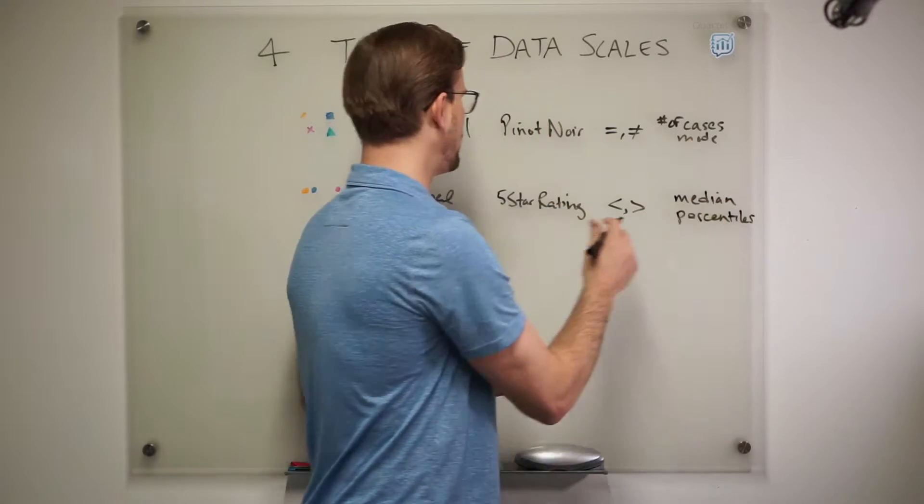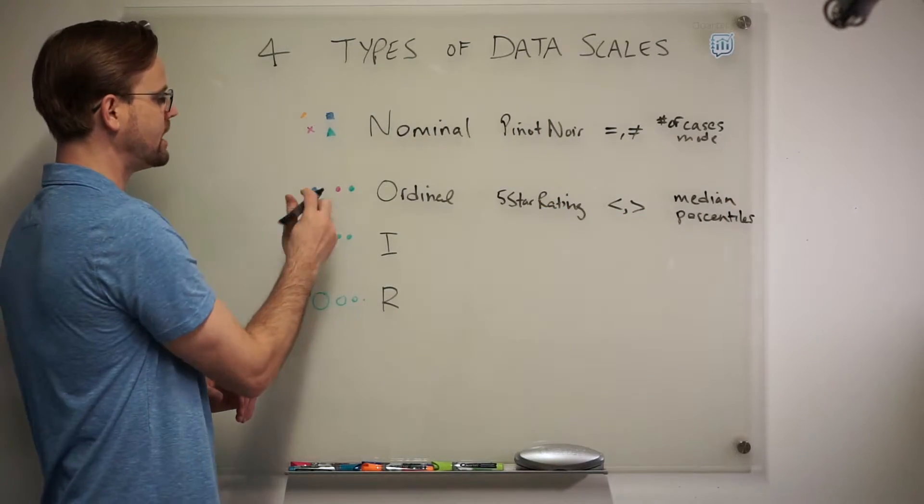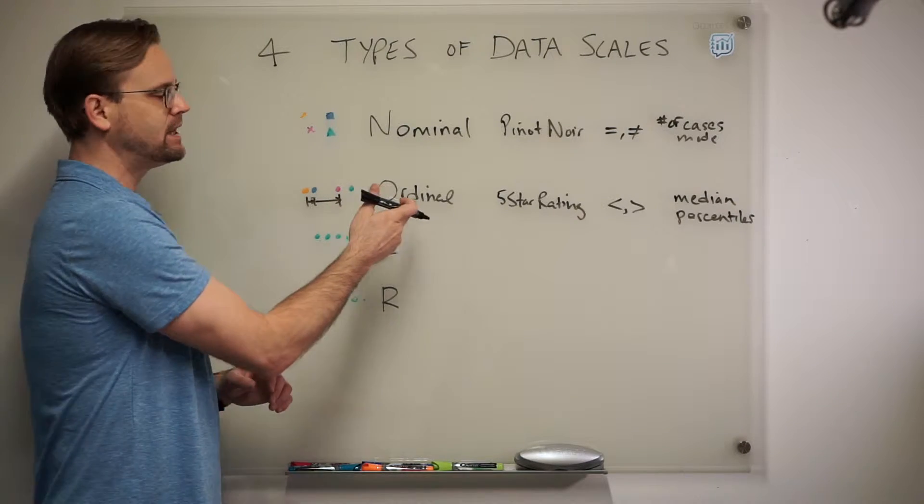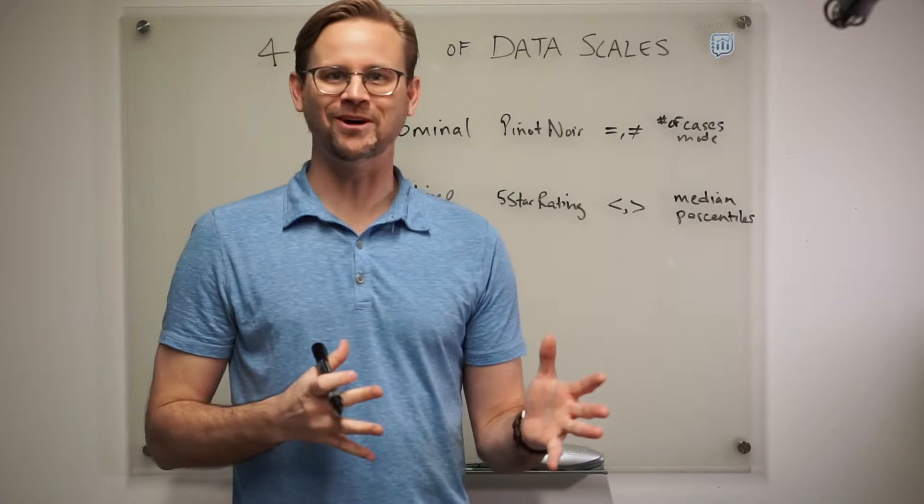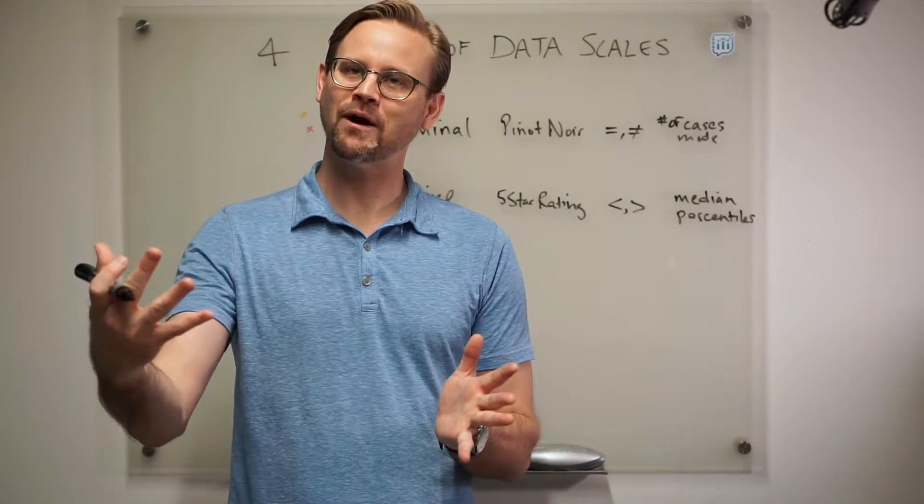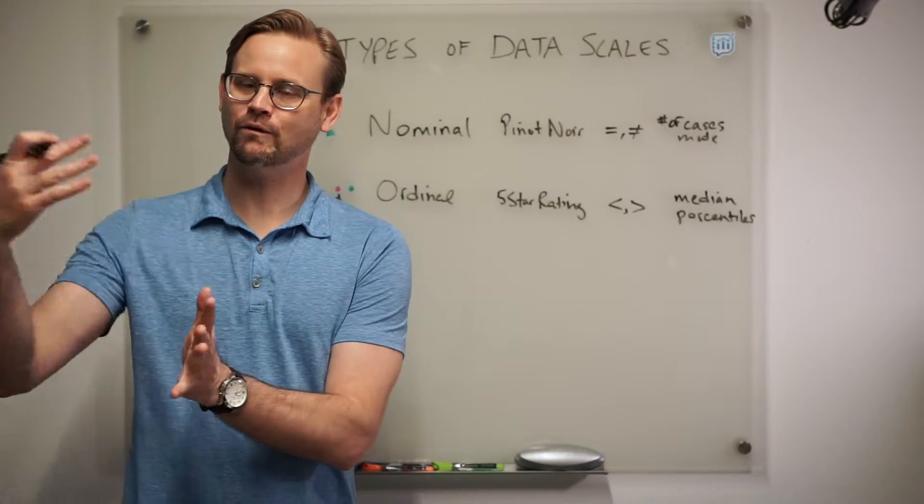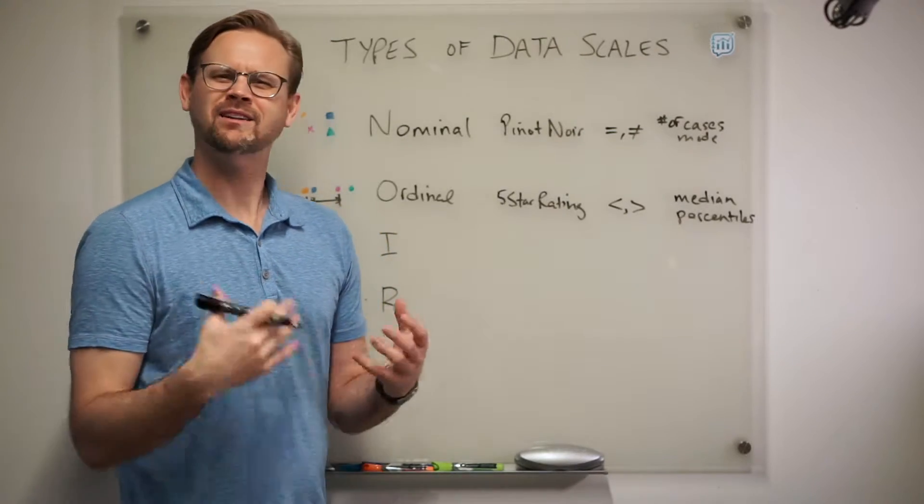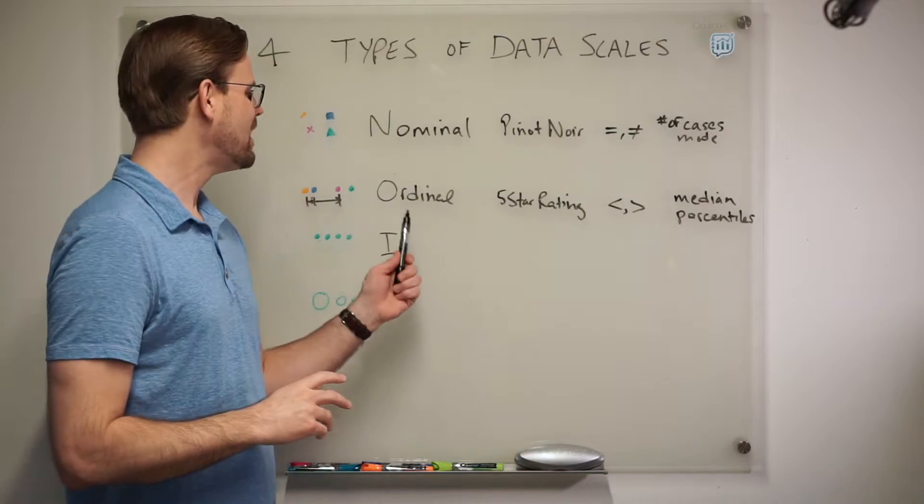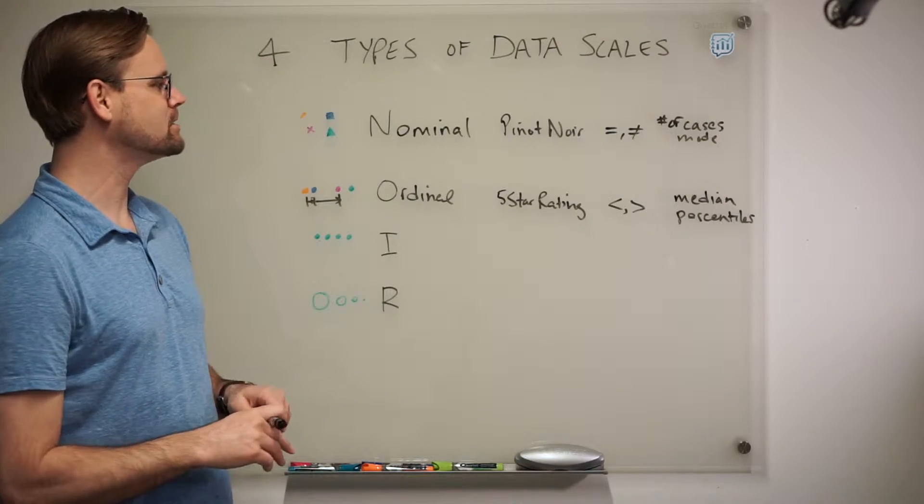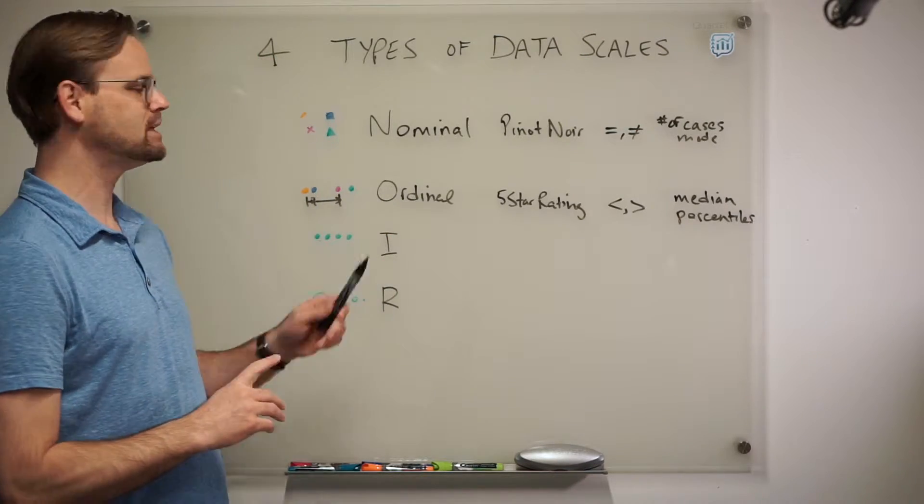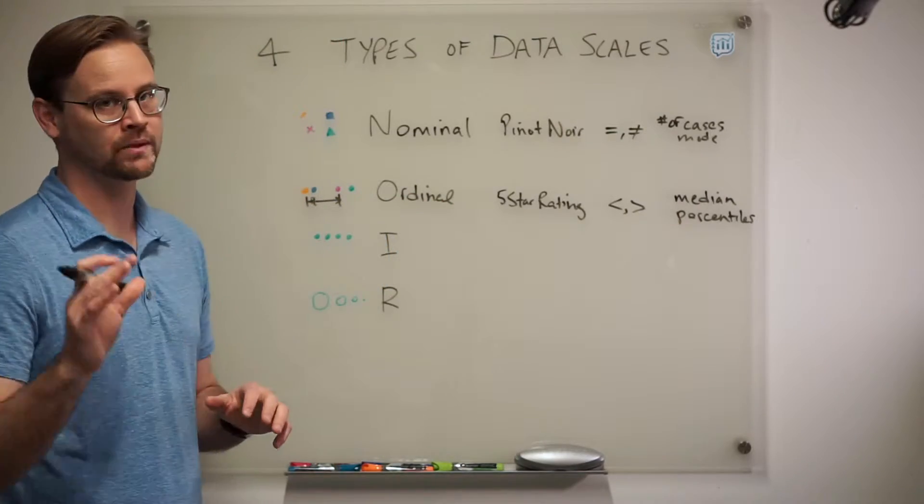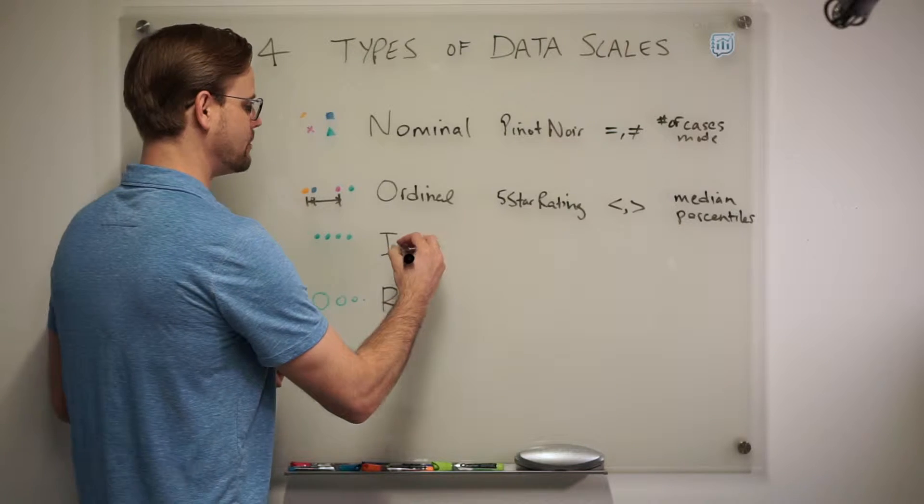But what's interesting about ordinal data scale types is that you notice how these symbols are not quite the same distance apart. Because let's say I give something a one star. Now is that the same improvement if I were to go to a two star as if I go from a four to a five star? Is that the same jump in improvement? Not necessarily. So that's why an ordinal data scale type is a little tricky because there's no notion of like the intervals aren't necessarily the same distance apart.